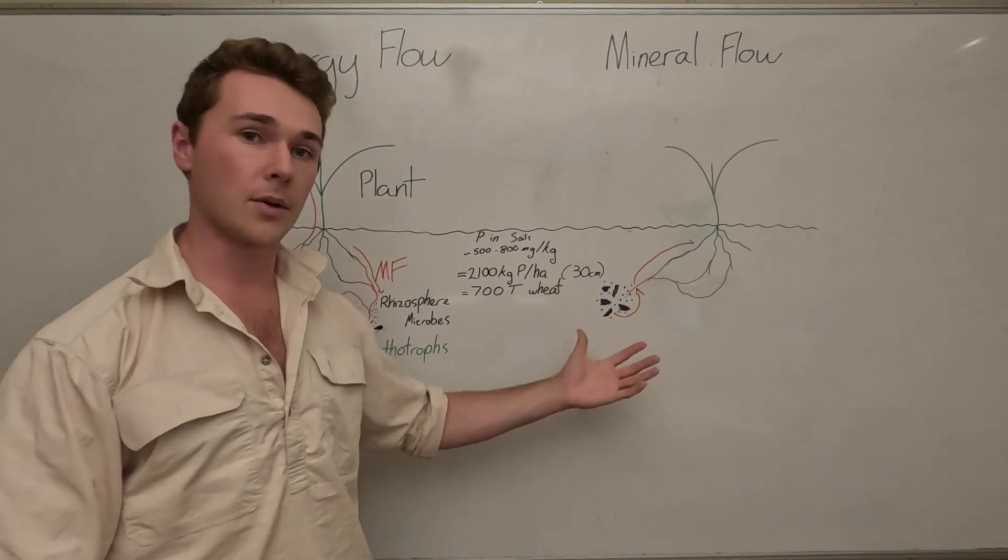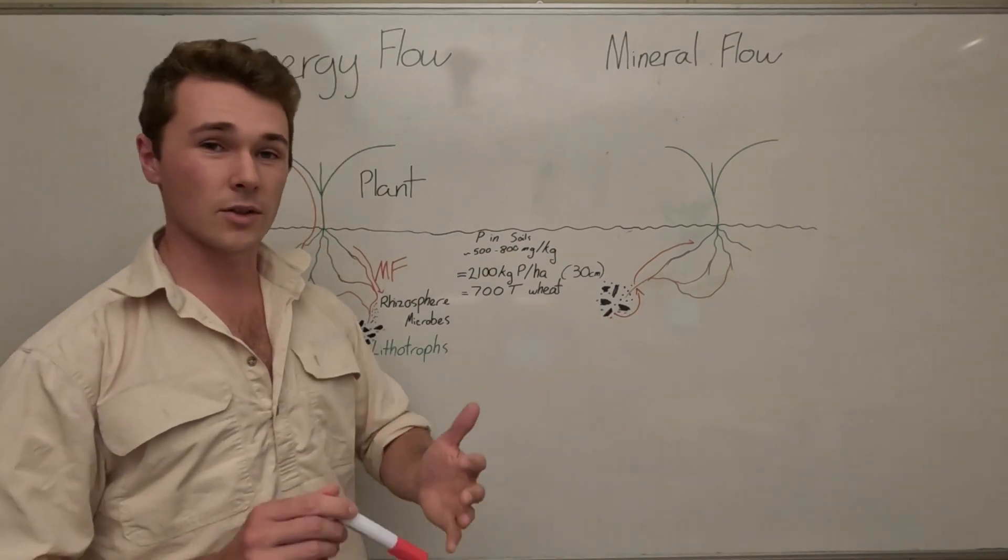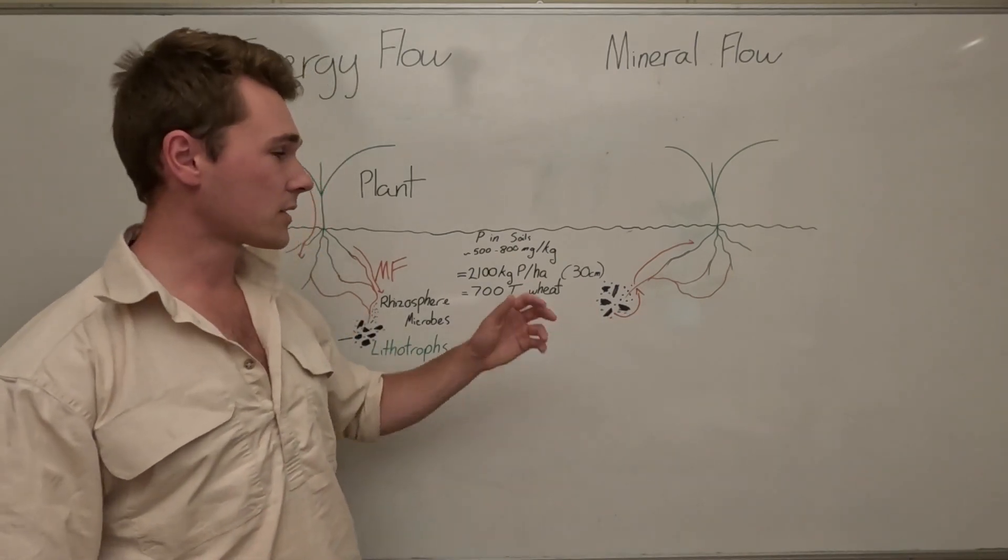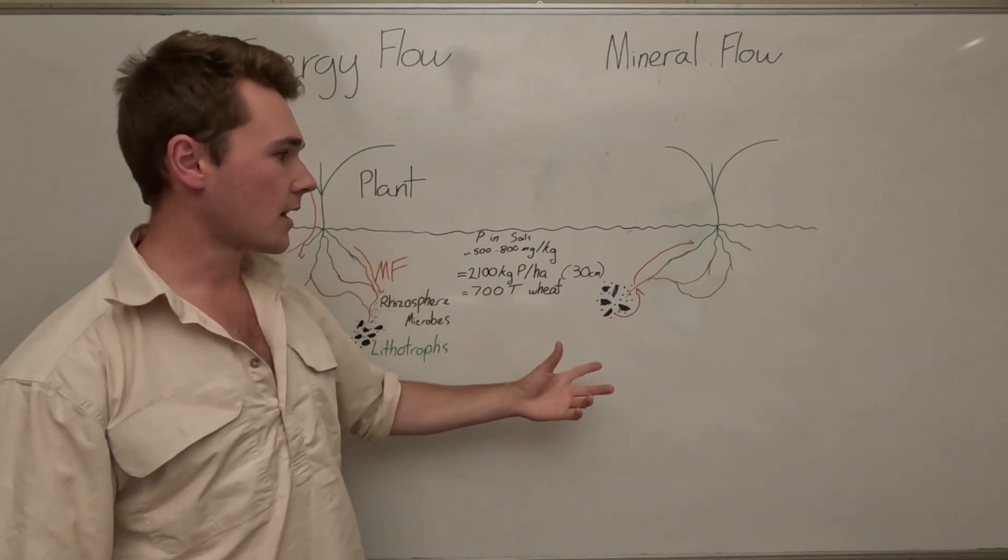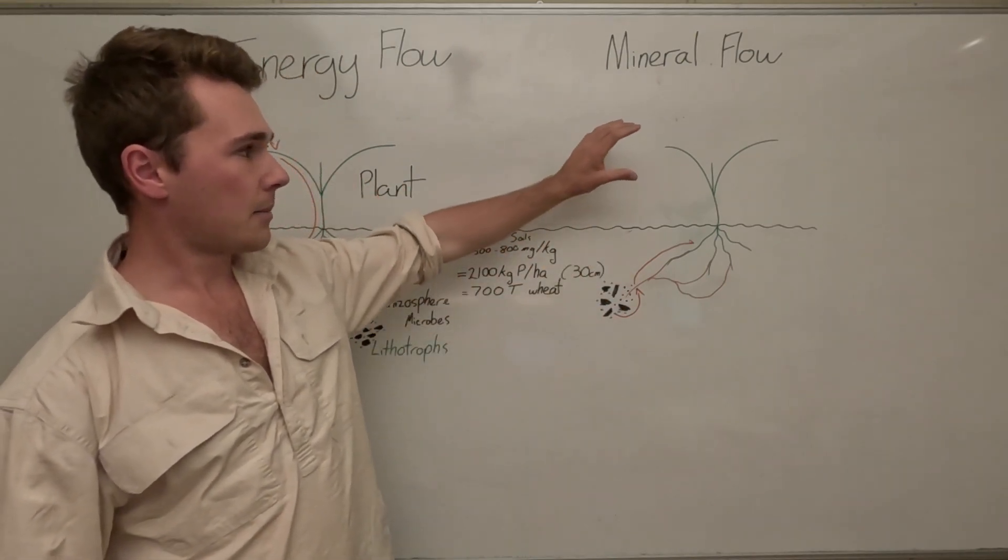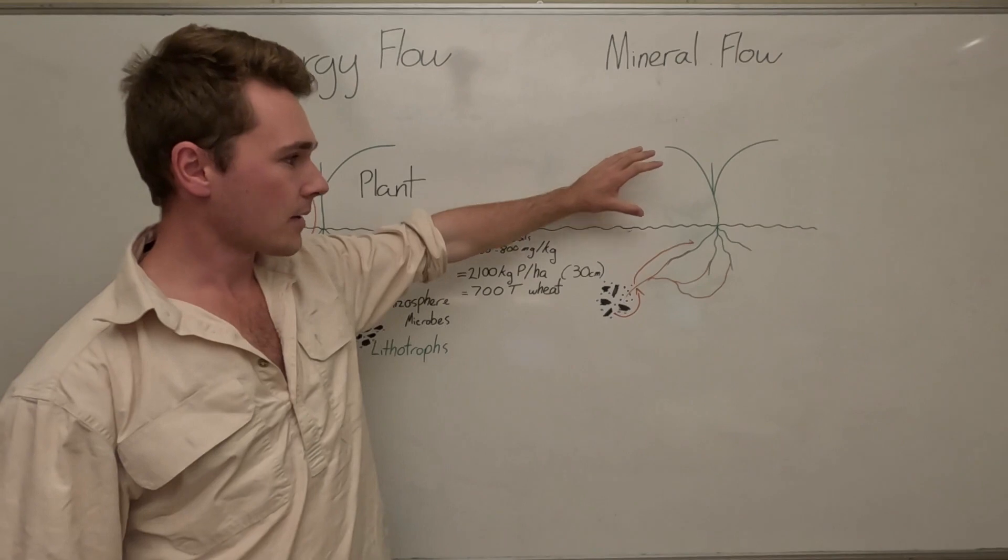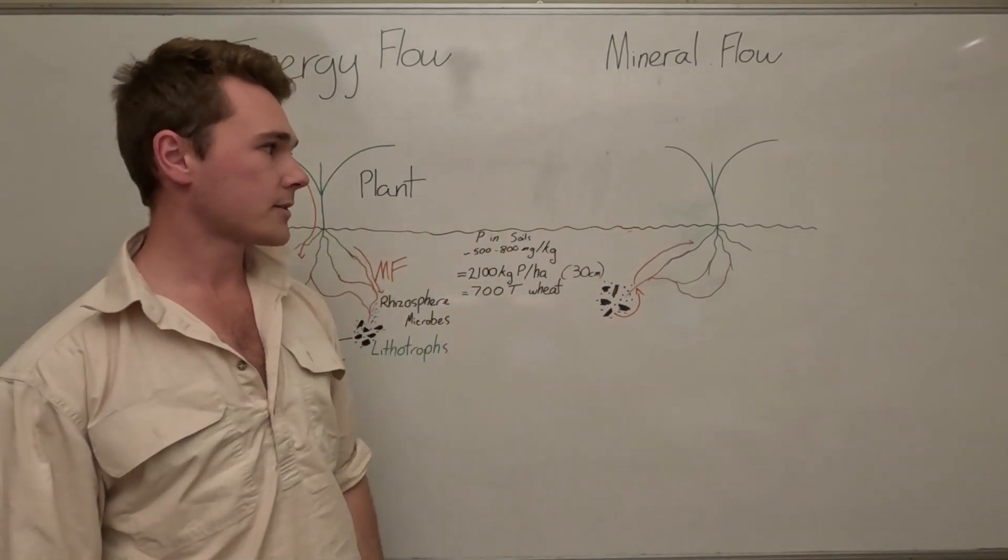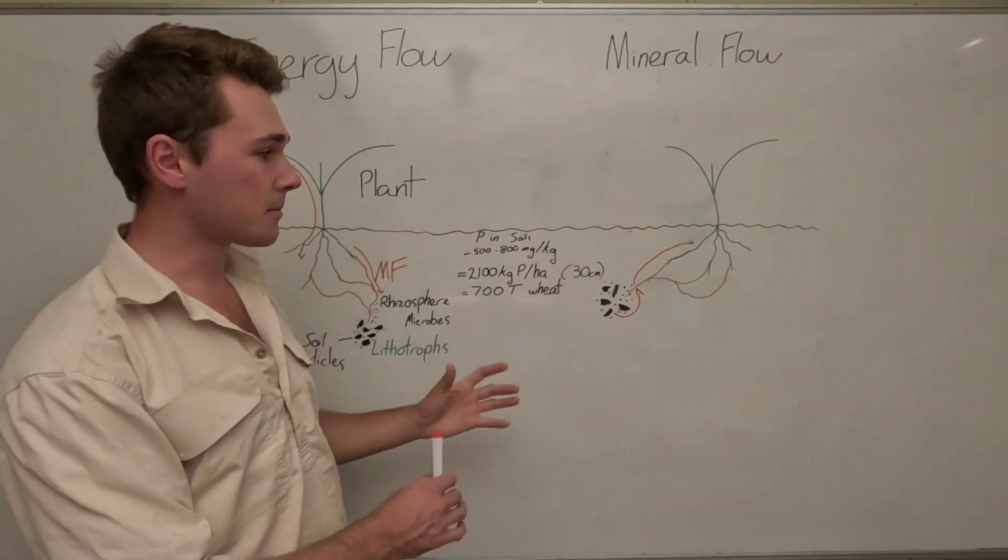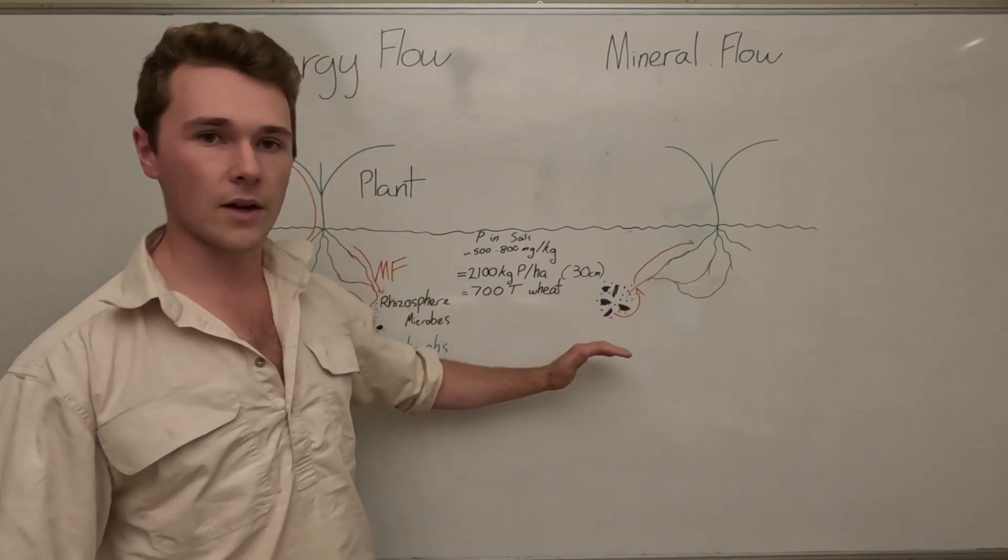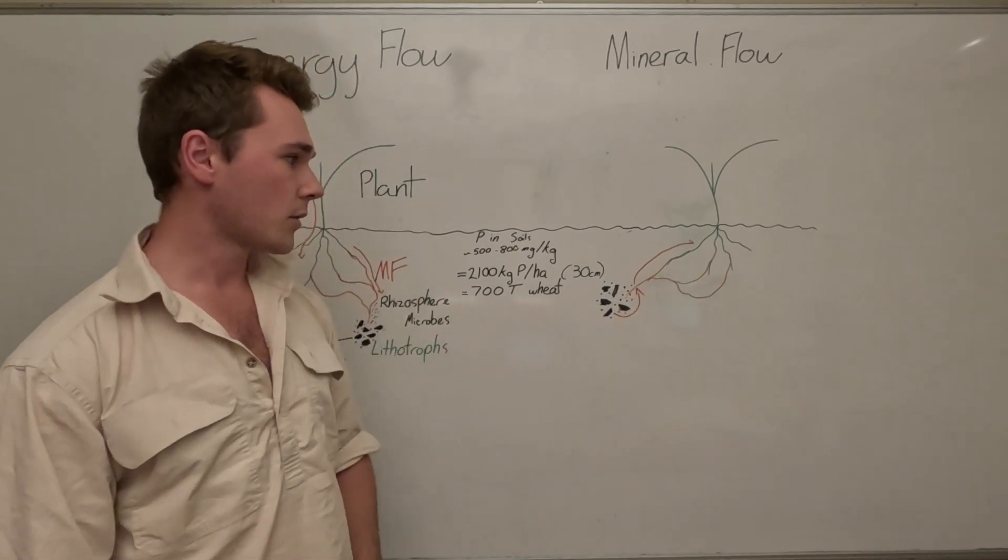If we apply fungicides we're going to be killing mycorrhizal fungi, as well as a lot of salt-based fertilizers and phosphorus applications, which is interesting enough. If we supply our plants phosphorus they almost get lazy and don't rely on these mycorrhizal fungi networks. But we've done so much to our soils that damage this process, that this process is not functional in most agricultural soils.